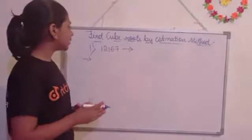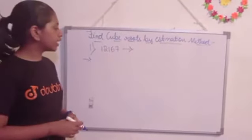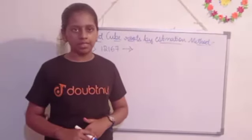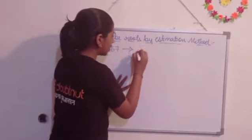So here is the first question, that is 12,167. We are going to find the cube root by the estimation method. First we are going to divide them. So first, as it is, we are going to write